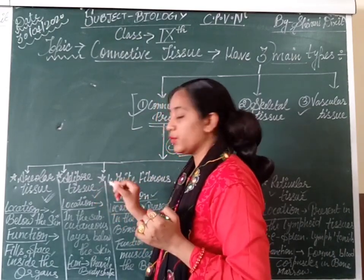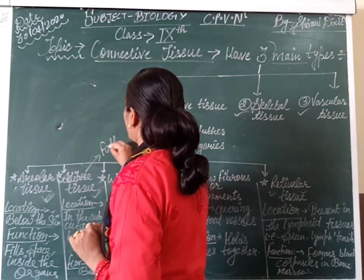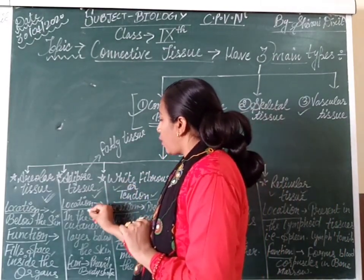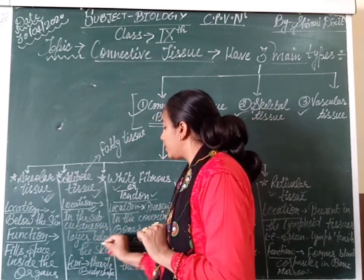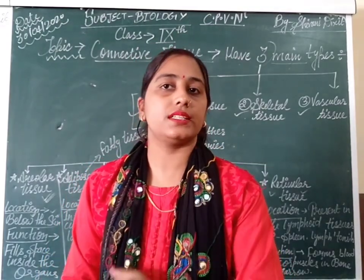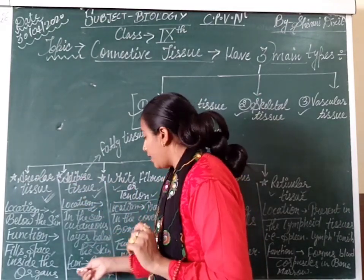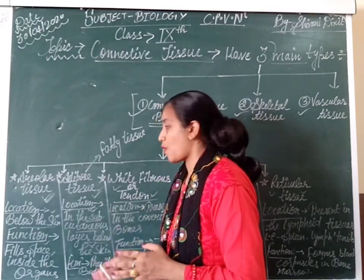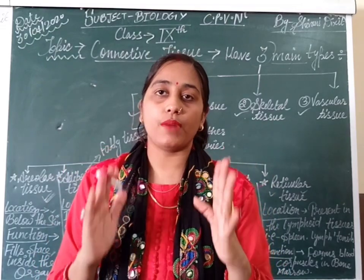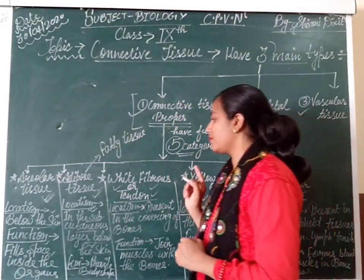The second category is adipose tissue, also known as fatty tissue. Adipose tissue is located in the subcutaneous layer below the skin. The cutaneous layer is the epidermis, and below that epidermis is the subcutaneous layer where adipose tissues are present. Their function is to provide shape to the body and act as a cushion covering internal body organs.